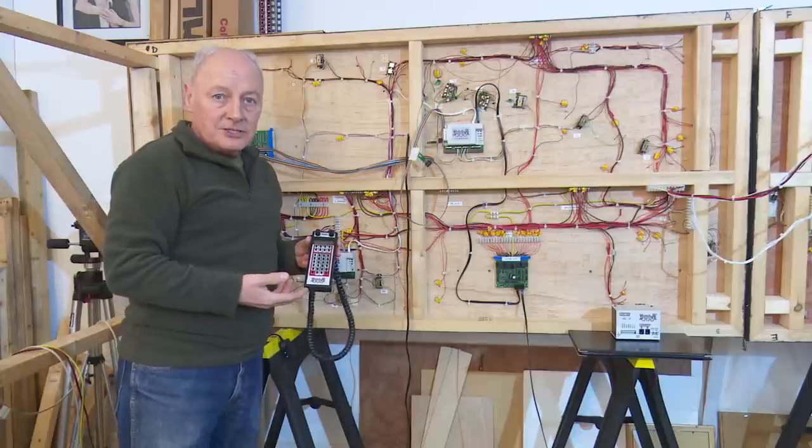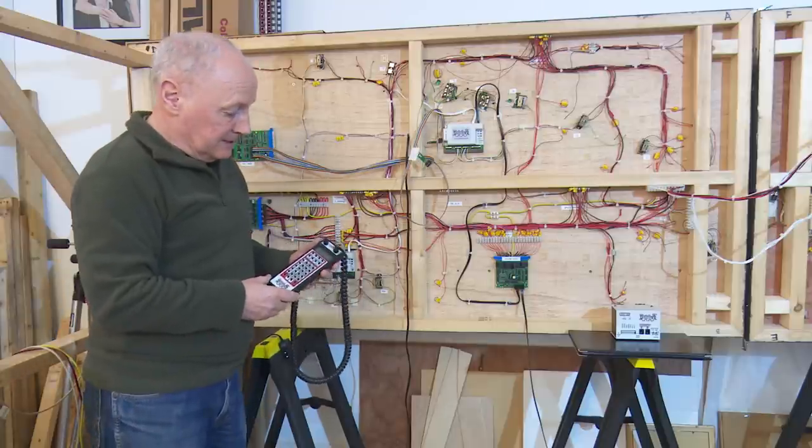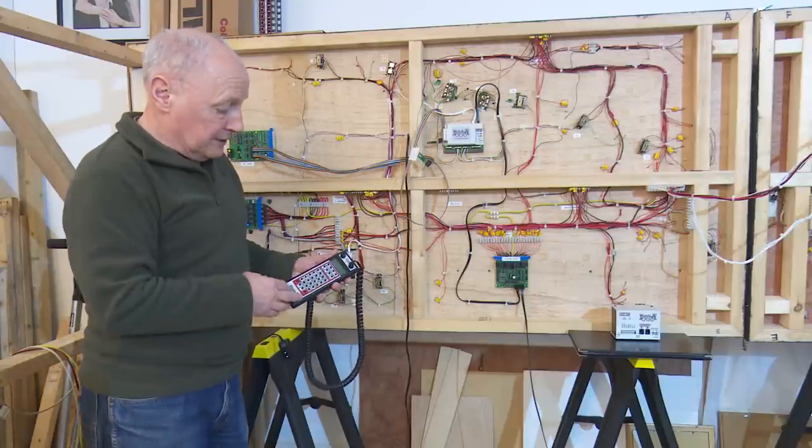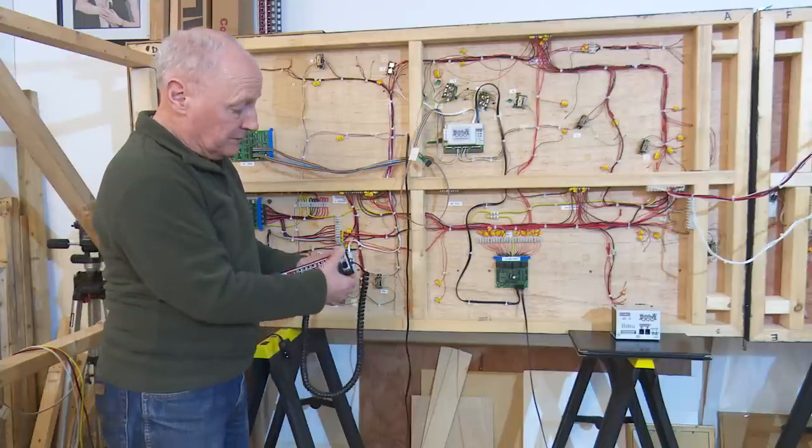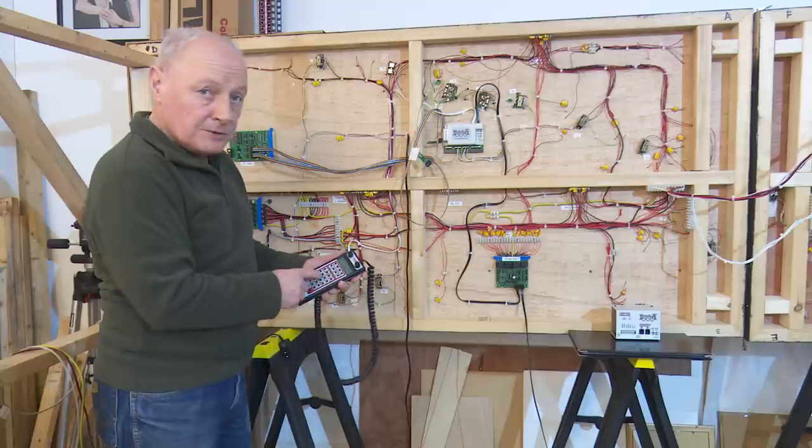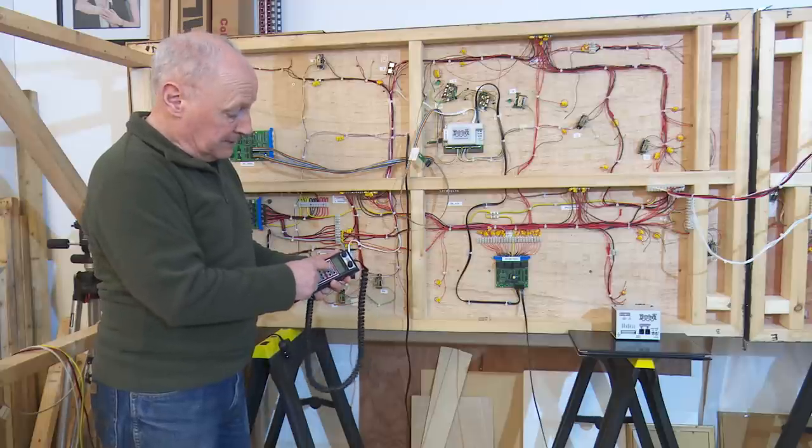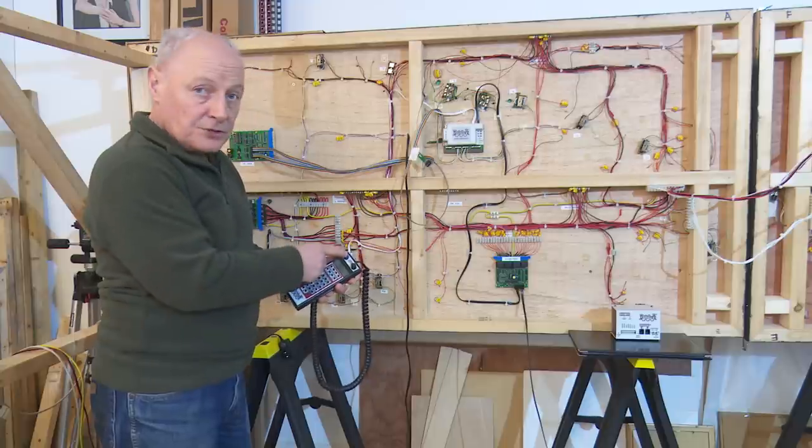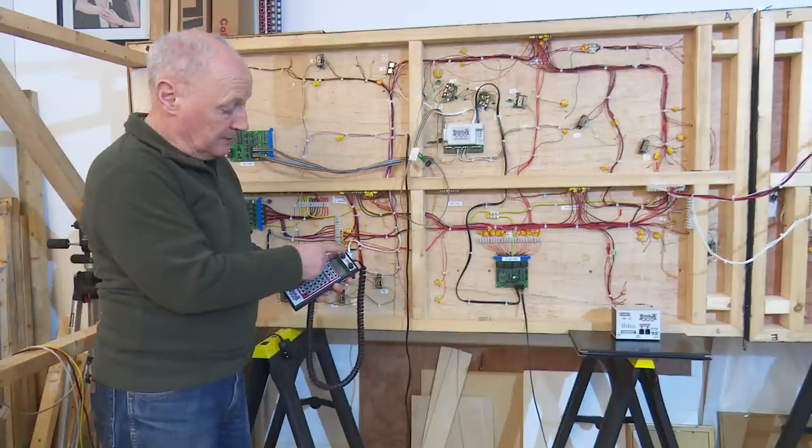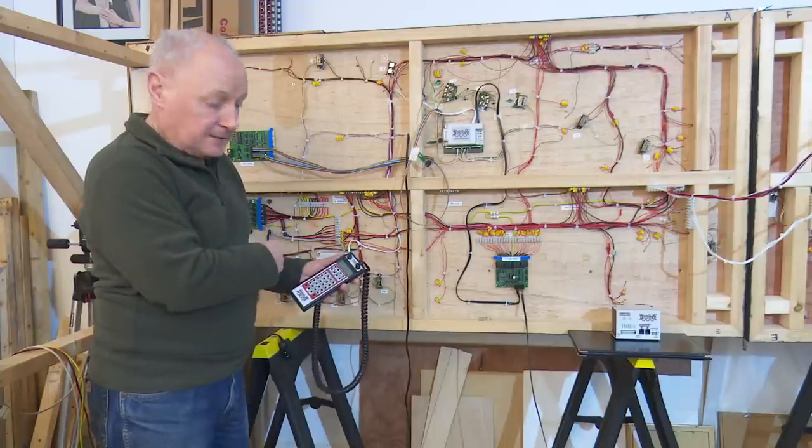So this is the Digitrax handset and it's been around for years I mean there have been a few improvements. It's all quite straightforward really to demand a loco you just press one of the two buttons at the top, the loco number, press the loco button again and away you go. You can also control a second loco at the same time on the second button.